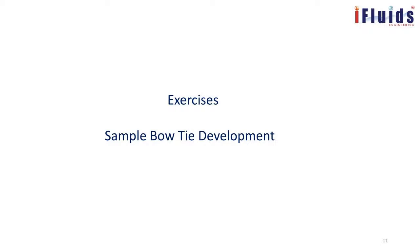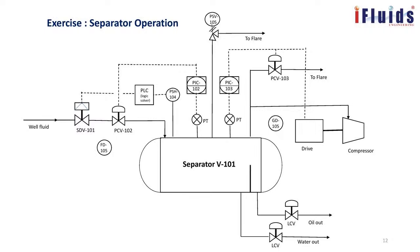Now we go into the exercise — the main objective of today's training. We will look at a three-phase separator in an oil and gas field, which is a pressurized vessel. Well fluid from an oil well — containing oil, gas, and water — enters from the left. Inside the separator, oil, water, and gas are separated. The liberated gas goes to a compressor, while oil and water settle based on density — oil floats and is taken over a weir plate, water is taken from the bottom through a control valve for further processing.